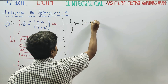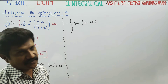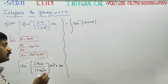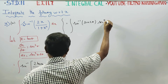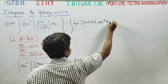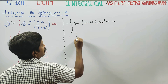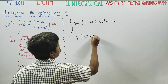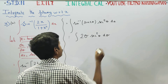Then, equal to integration of sin inverse of sin 2 theta — because 2 tan theta by 1 plus tan square theta equals sin 2 theta by the double angle formula — into secant square theta d theta. So sin inverse sin cancels, giving 2 theta times secant square theta d theta.